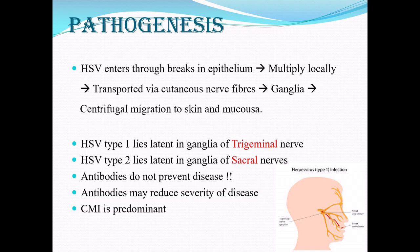The herpes simplex virus breaks through the epithelium, multiplies there first, then slowly enters the cutaneous nerve fibers and travels via nerve fibers into the ganglia, multiplies there, and then migrates back to skin and mucosa in the direction the particular nerve transmits signals. HSV type 1 has affinity for staying in the trigeminal nerve, whereas HSV type 2 has an affinity for the sacral nerves. Antibodies do not have much effect on this viral infection — they may reduce severity of symptoms but do not eliminate the disease. The most important requirement is proper cell-mediated immunity.